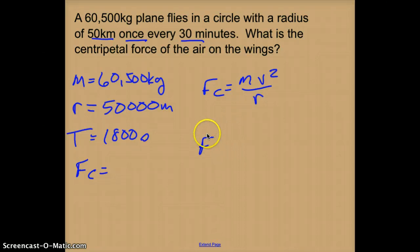So my centripetal force, first thing I need to do is find my velocity. So my tangent velocity is going to be equal to 2π, 50,000 divided by the time period, 1,800.